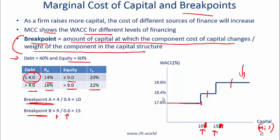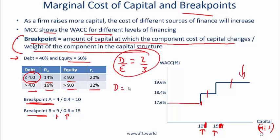One point to keep in mind: on the exam you might be given a debt-to-equity ratio of 2/3. From this you need to figure out that the weight of debt is 0.4 and the weight of equity is 0.6. Make sure you know how to convert a D/E ratio into capital structure weights.